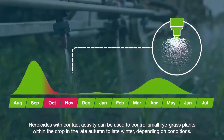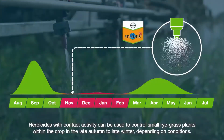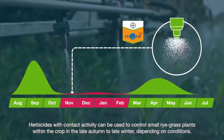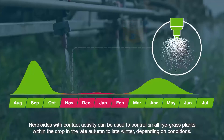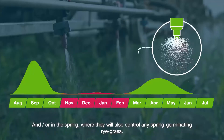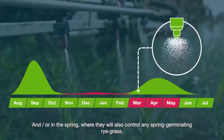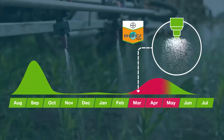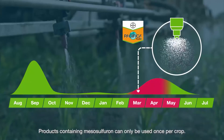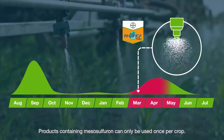Herbicides with contact activity can be used to control small rye grass plants within the crop in the late autumn to late winter, depending on conditions, and also in the spring where they will also control any spring germinating rye grass. Products containing mesosulphuron can only be used once per crop.